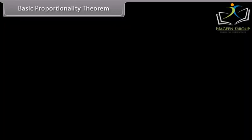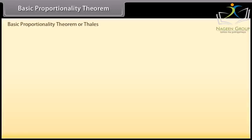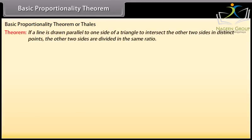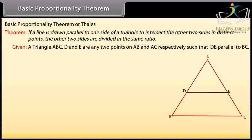Basic Proportionality Theorem, also known as Thales Theorem: If a line is drawn parallel to one side of a triangle to intersect the other two sides in distinct points, the other two sides are divided in the same ratio. Given triangle ABC, D and E are any two points on AB and AC respectively such that DE is parallel to BC.